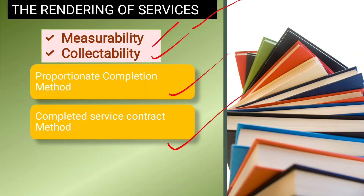In the completed service contract method, revenue is recognized only when the entire service contract is completed. So in the first method, revenue is recognized proportionately at different stages of completion, while in the second method, recognition happens only upon full completion.